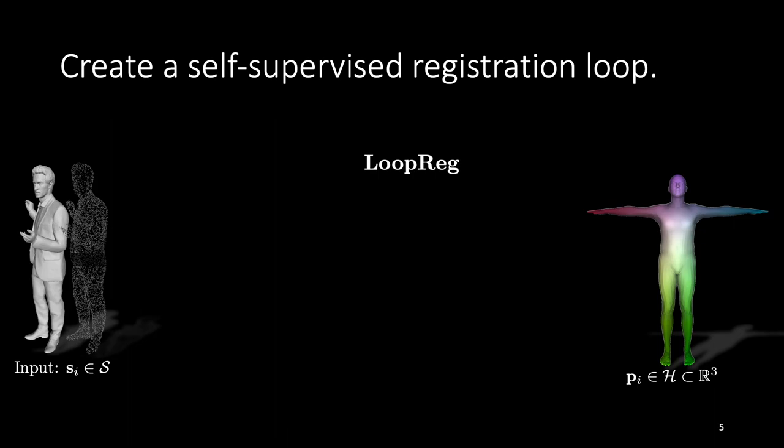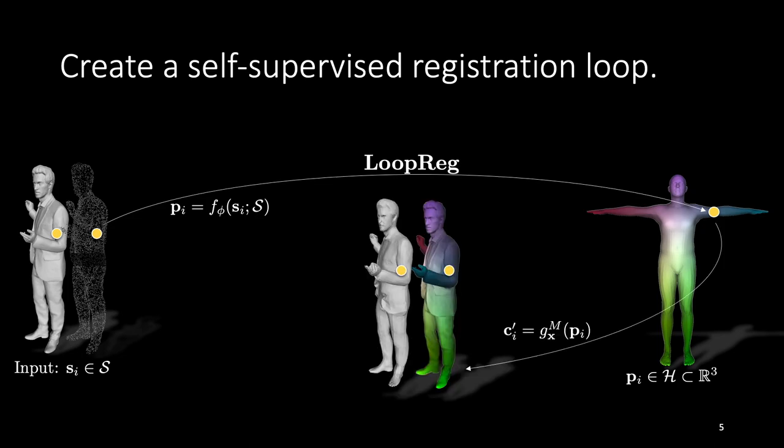Our key idea is to formulate registration as a continuous differentiable and self-supervised loop. For every input scan point we use a neural network to predict its correspondence to the parametric model. We then deform the corresponding point according to the model parameters and minimize the distance between the scan point and the transformed corresponding point.